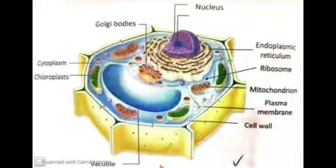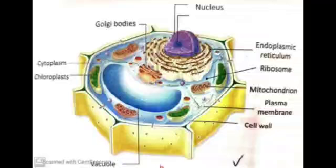In animal cells, vacuoles are small in size, but in plant cells they have very large vacuoles. In some cells, the central vacuole may occupy a very large part of the cell — as much as 50 to 90 percent of cell volume.